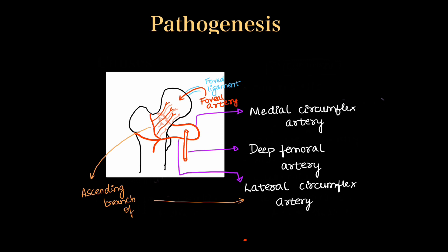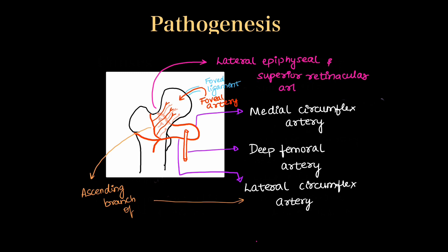There is also a foveal ligament along which runs a foveal artery, which also supplies the head of the femur. The major blood supply to the head and neck of the femur comes from lateral epiphyseal branches and superior retinacular branches of these arteries.